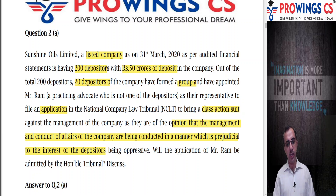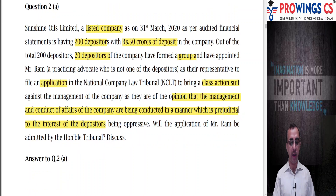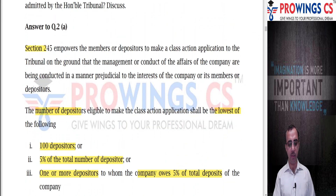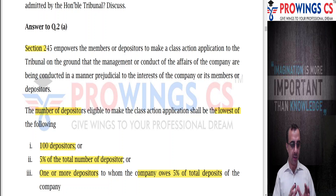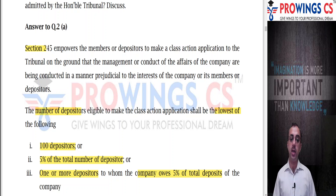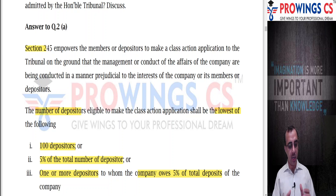This question clearly hits Section 245 - class action suit. Section 245 empowers members or depositors to make a class action to the tribunal on the ground that the management and conduct of affairs are being conducted in a manner prejudicial to their interests. The number of depositors who can make a class action suit shall be the lowest of: 100 depositors, 5% of total depositors, or one or more depositors to whom the company owes five percent or more of the deposit.